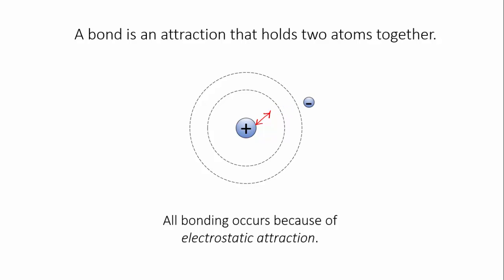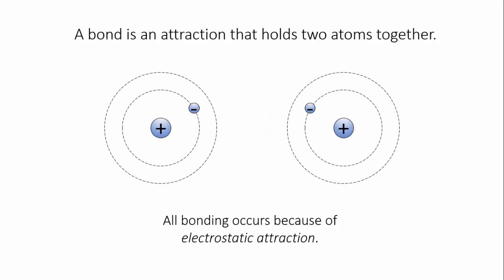It's this attraction that must be broken when an atom loses an electron to become an ion. Electrostatic attraction can also occur between atoms. That is, between the electrons of one atom and the protons of another. This binds atoms together into macroscopic substances.